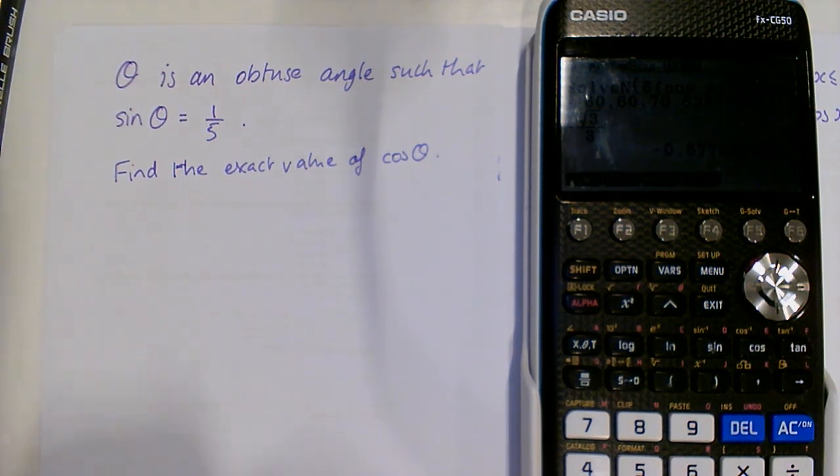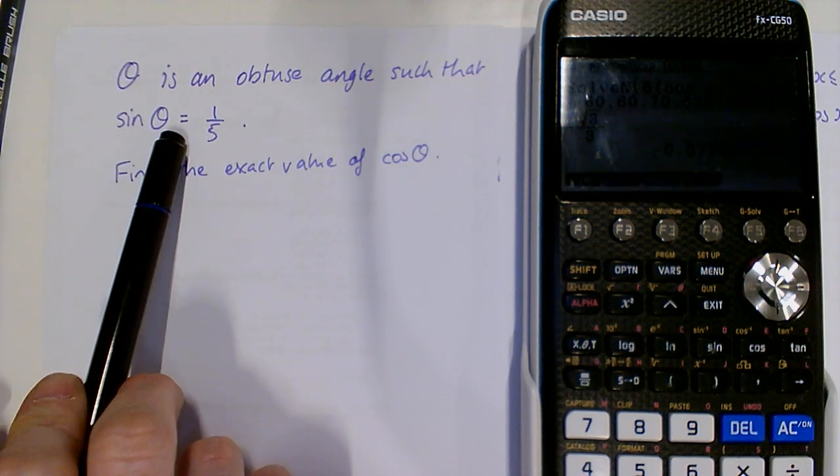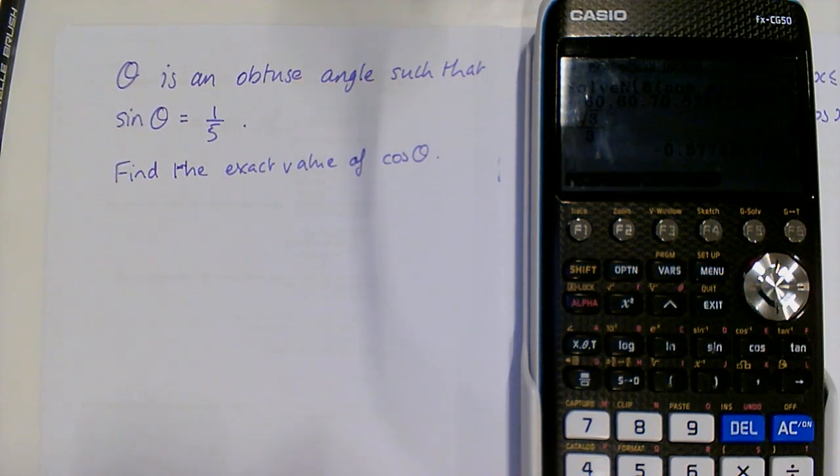Hi, year 12s. We're going to use one trig ratio to help us find the exact value of another trig ratio. You can do this with trig identities, but we haven't learned those yet, so we're going to learn a different strategy that always works too.